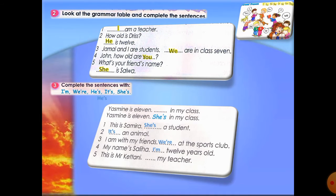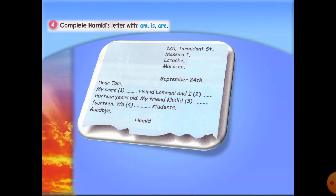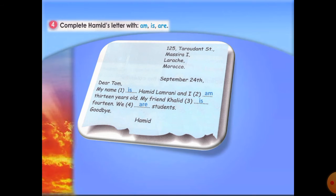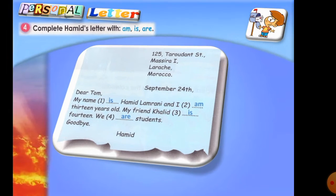Number five: Mr. Katani is singular male — 'He's my teacher.' Let's practice more. On the same page, complete Hamid's letter with 'am,' 'is,' or 'are' — the three basic forms of the verb 'be' in the present simple. This is a letter from Hamid: 'Dear Tom, my name is Hamid Lamrani and I am 13 years old. My friend Khalid — he is 14. We are students. Goodbye, Hamid.' This is a personal or friendly letter.